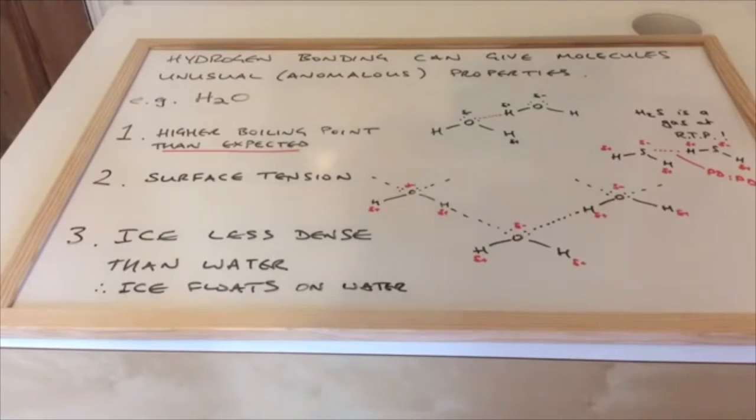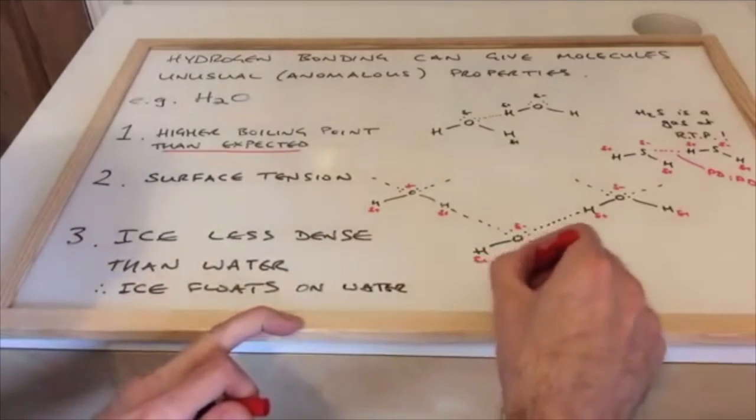the water molecules are actually forced further apart. So the volume begins to increase in the water - obviously its mass stays the same. So if you take 10 grams of water and freeze it, you've still got 10 grams of water; you don't lose any of the mass. But the volume increases because it forms what's known as an open